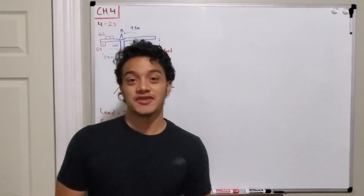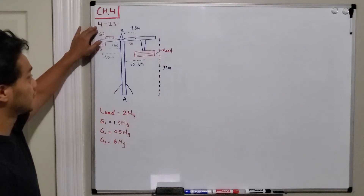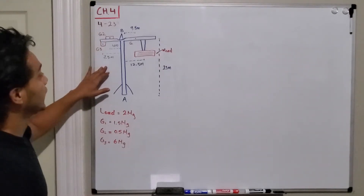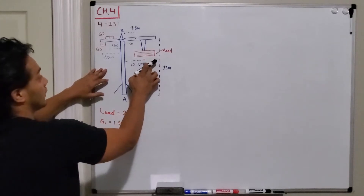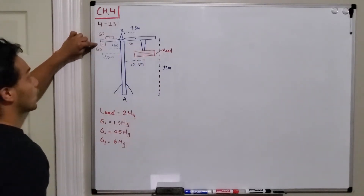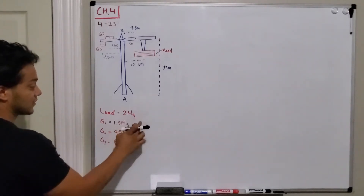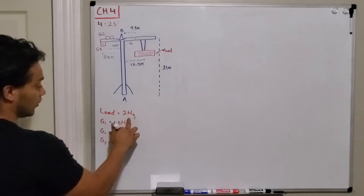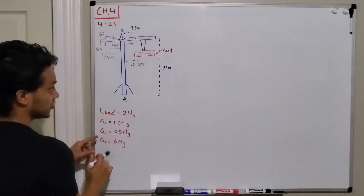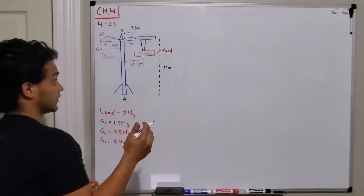Welcome back everyone to Learning by Teaching. We are doing statics problem 4.23. Basically, we have a crane that has a load, a weight at G1, a weight at G2, and also a weight at G3. They give us the mass of each one: the mass for the load, the mass at point G1, and the mass of G2 and G3.